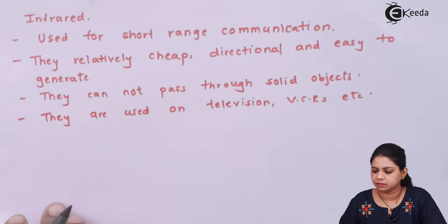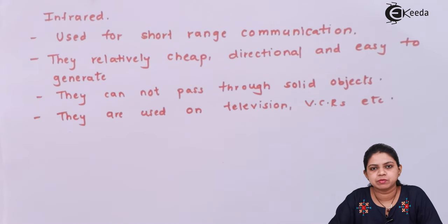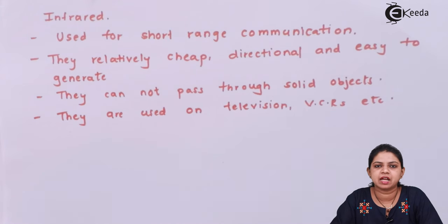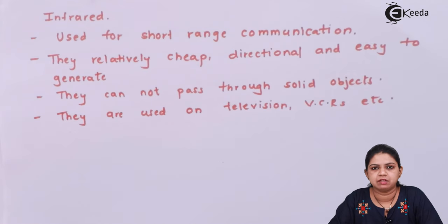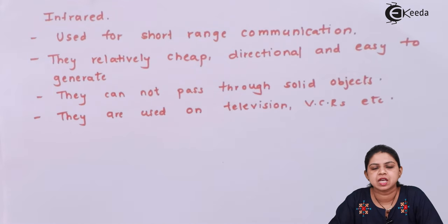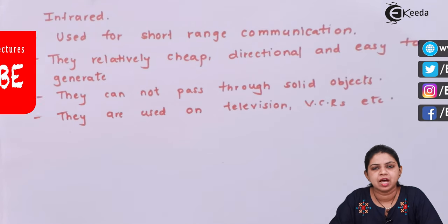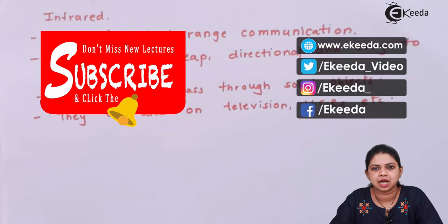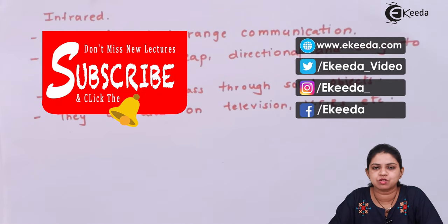To summarize the various types of wireless media: radio waves are omnidirectional and can travel in all directions and penetrate buildings, but environmental conditions like rain disturb them and they bounce back from obstacles. Microwaves travel in a straight line and require aligned antennas with periodic repeaters over longer distances. The last type is infrared, used for short-range communication. That covers all the wireless media types.